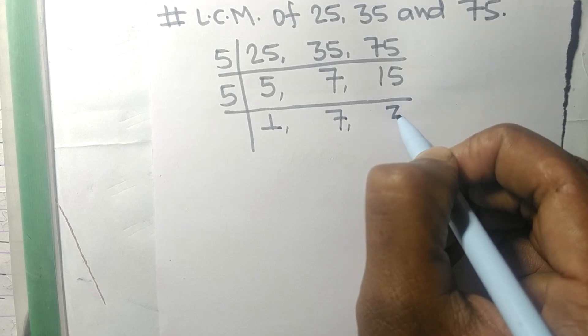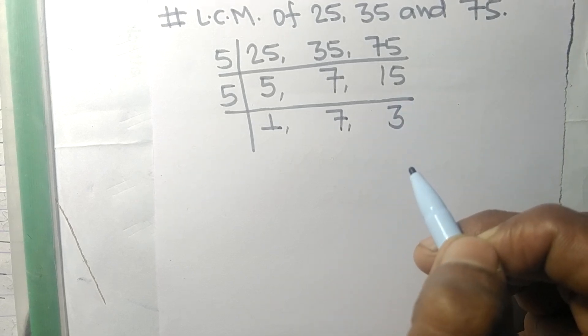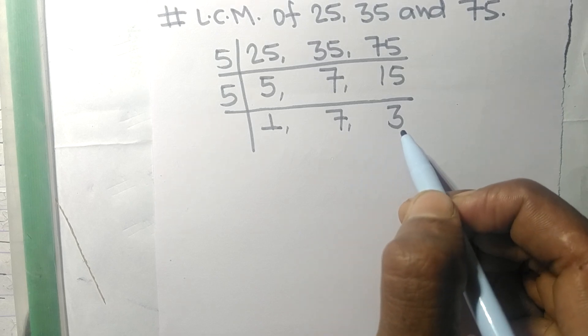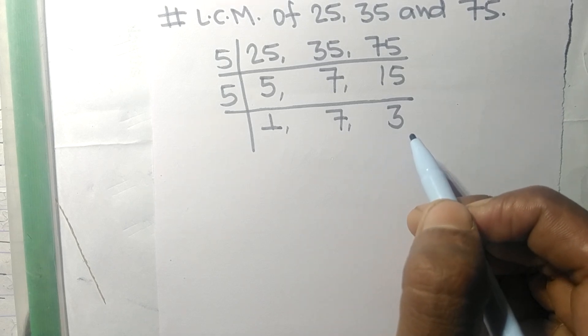Now the numbers 1, 7, and 3 are not divisible by the same number.